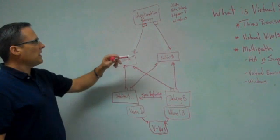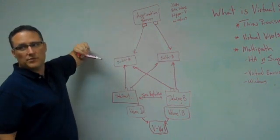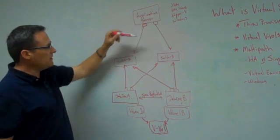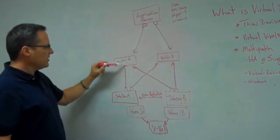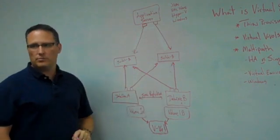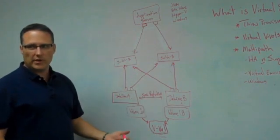So as you can see, what happens is if your application server is looking for its storage, it's going to choose one of the two paths to go down. It's going to hit a switch. And then it's going to drop down either into your DataCore node A or into your DataCore node B and see your virtual volume. It's a true multipath.